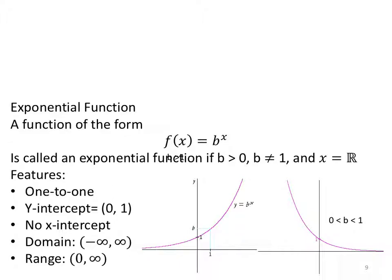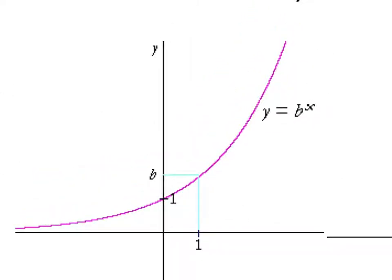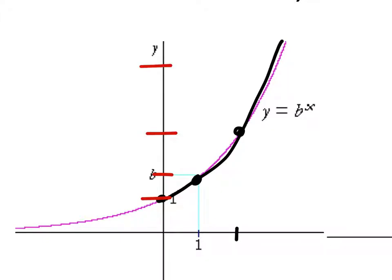What I do want to look at is the graphs. When the base is greater than 1, the graph automatically goes through the point (0, 1), and then it increases more and more each time from there. So for example, this is 1b, then 2 — you see how the distance in the y values is getting bigger and bigger? That's exponential growth.